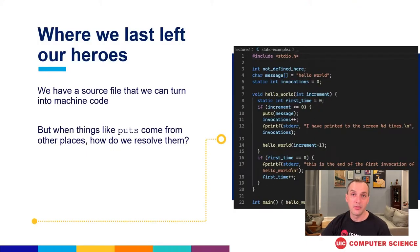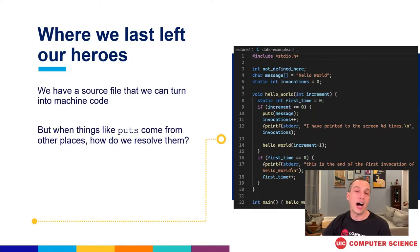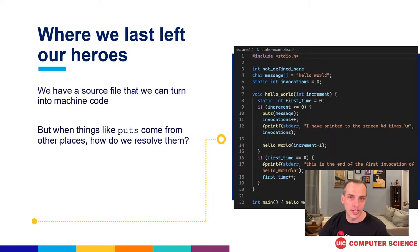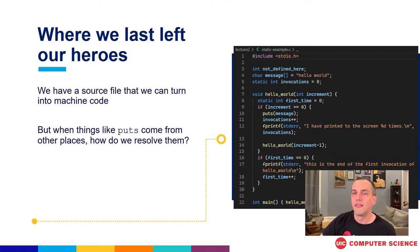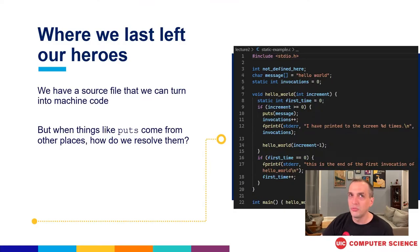The main topic we've been talking about so far is building from source code to a running program. One really important intermediate point is creating the object files that are the output of the compiler, which has taken our source file and turned it into assembly code and some extra things we're eventually going to need to fix later on.